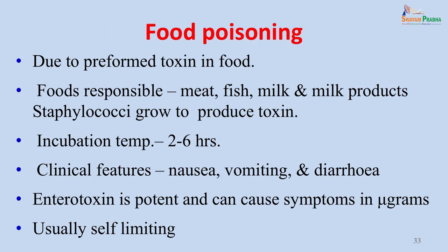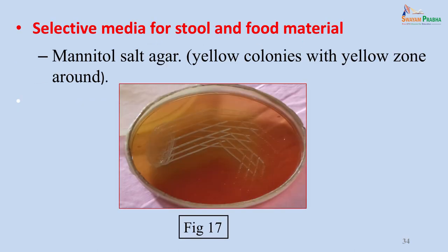One toxin-mediated disease is food poisoning, caused by a preformed toxin in food — responsible foods include meat, fish, milk and milk products. Staphylococci grow and produce toxin in food with a short incubation period of 2 to 6 hours. Clinical features are nausea, vomiting and diarrhea. The enterotoxin is potent and can cause infection in microgram quantities; the disease is usually self-limited and does not require antibiotic treatment. To isolate staphylococci from stool or food samples, the selective medium mannitol salt agar is used, on which Staphylococcus aureus produces yellow-colored colonies with a yellow zone around them.